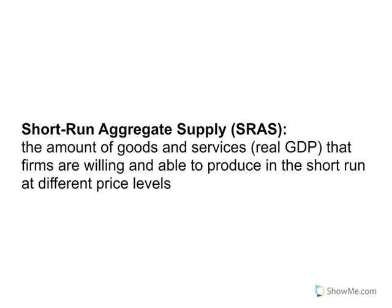We can abbreviate short-run aggregate supply as SRAS, or sometimes you will see it just as AS for aggregate supply — they mean the same thing. It's the amount of goods and services, real GDP, that firms are willing and able to produce in the short-run at different price levels. So it's all about production: all the firms in the economy, what are they producing at wherever the price level happens to be in the short-run — that is short-run aggregate supply.